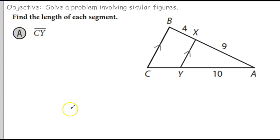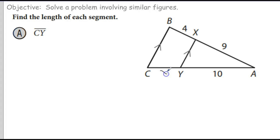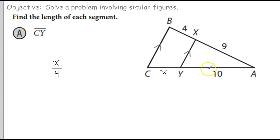Now on to the problem. Find the length of CY. I'm going to call that X. I want to compare X to 4, so I'm going to set up my ratio. X goes to 4 — notice this is the bottom part to the top part. So I have to do the same ratio on the other side, which gives us X to 4 equals 10 to 9.